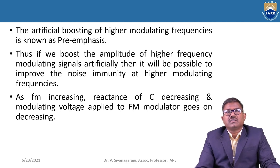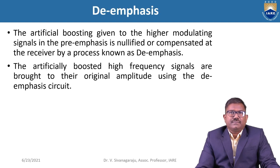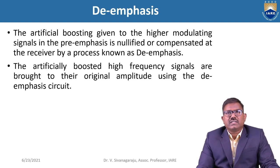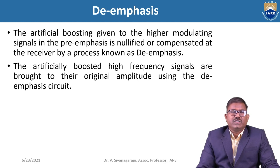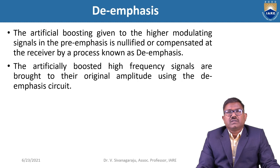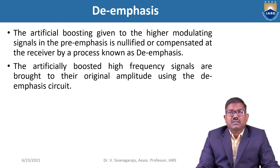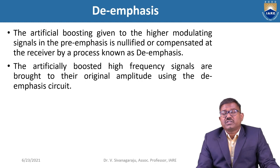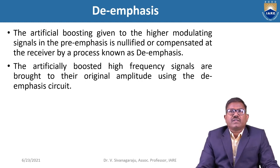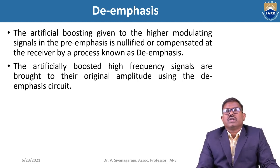Pre-emphasis is done on the transmitter side, and the reverse process is done at the receiver side. The artificial boosting given to the higher modulating signals in the pre-emphasis is nullified or compensated at the receiver by a process known as de-emphasis. At the transmitter we gave artificial boosting — that means increasing amplitude — and that is compensated at the receiver. That process is known as de-emphasis.